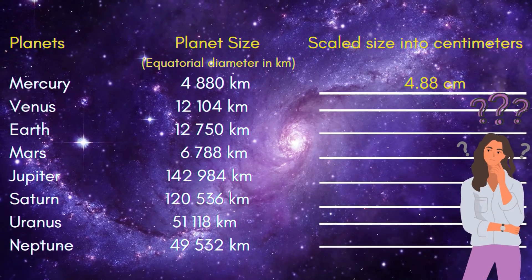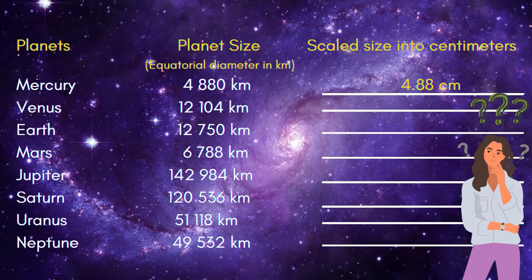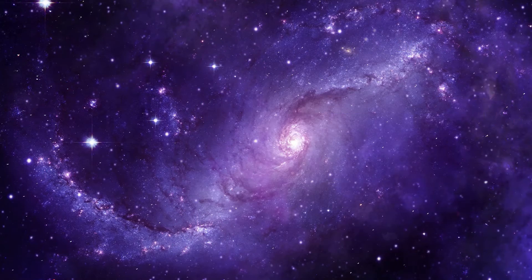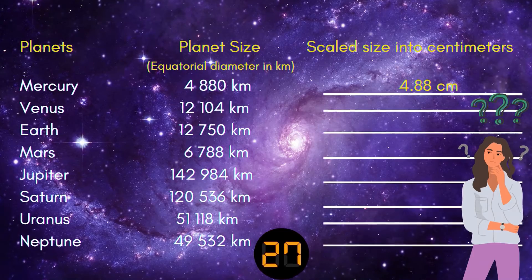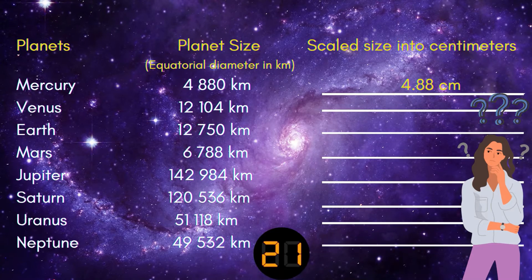All we have to do is compute the scaled size into centimeters for the planets Mercury to Neptune. The planet sizes — equatorial diameters in kilometers — are given. All you have to do is solve for the scaled size in centimeters. Good luck, guys! I'll be giving you enough time to answer this. Don't forget to use the correct formula to get the scale size in centimeters.